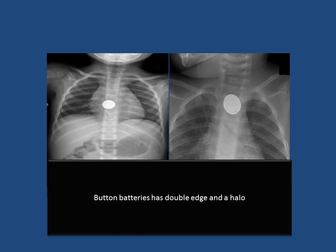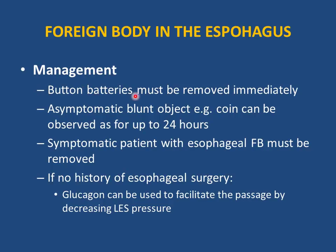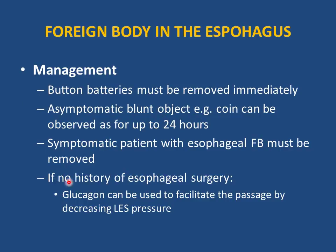Batteries must be removed immediately — they can cause mucosal injury in as little as one hour and involve all esophageal layers within four hours. Observation of batteries in the esophagus is not acceptable. Asymptomatic blunt objects like coins can be observed for up to 24 hours, but longer risks pressure necrosis. Any symptomatic foreign body must be removed immediately regardless of type. If there is no history of esophageal surgery, glucagon may be used to decrease lower esophageal sphincter pressure.